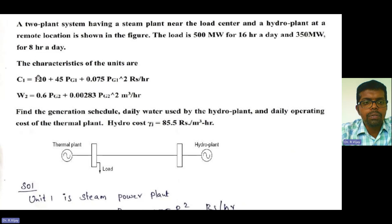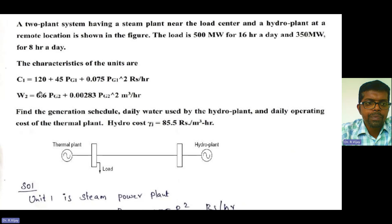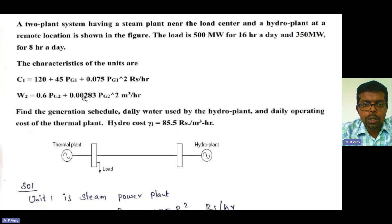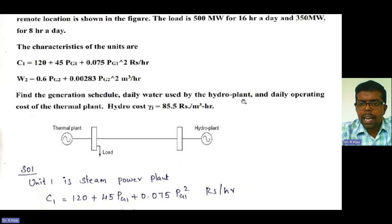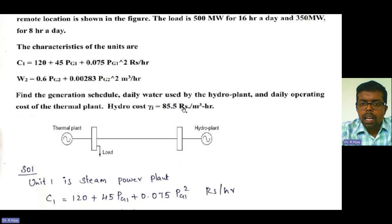The characteristics of the units are: C1 = 120 + 45·PG1 + 0.075·PG1² rupees per hour. The water equation is given as W2 = 0.6·PG2 + 0.00283·PG2² meter cube per hour (for the hydro unit). Find the generation schedule, daily water used by the hydro power plant, and daily operating cost of the thermal power plant. The hydro cost is given as ζ = 85.5 rupees per meter cube per hour.